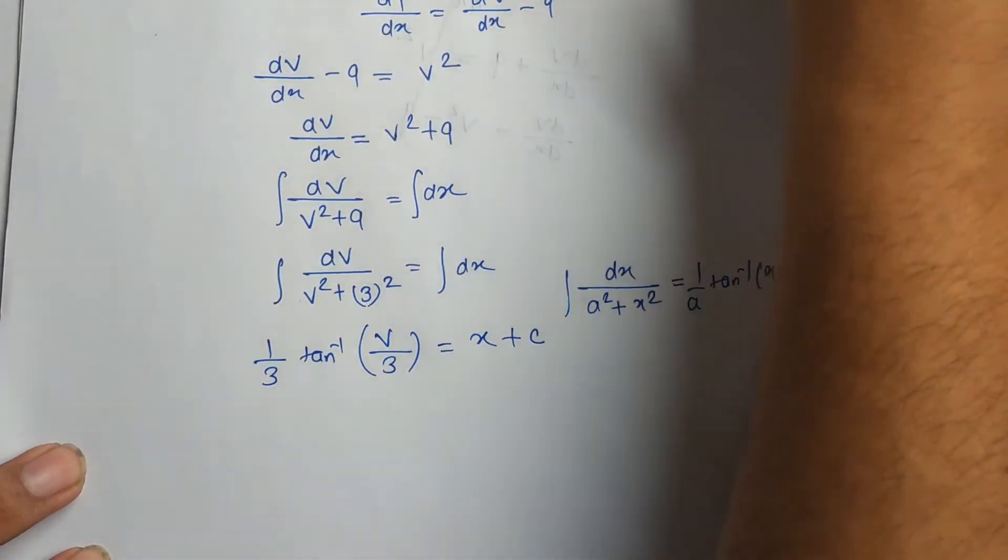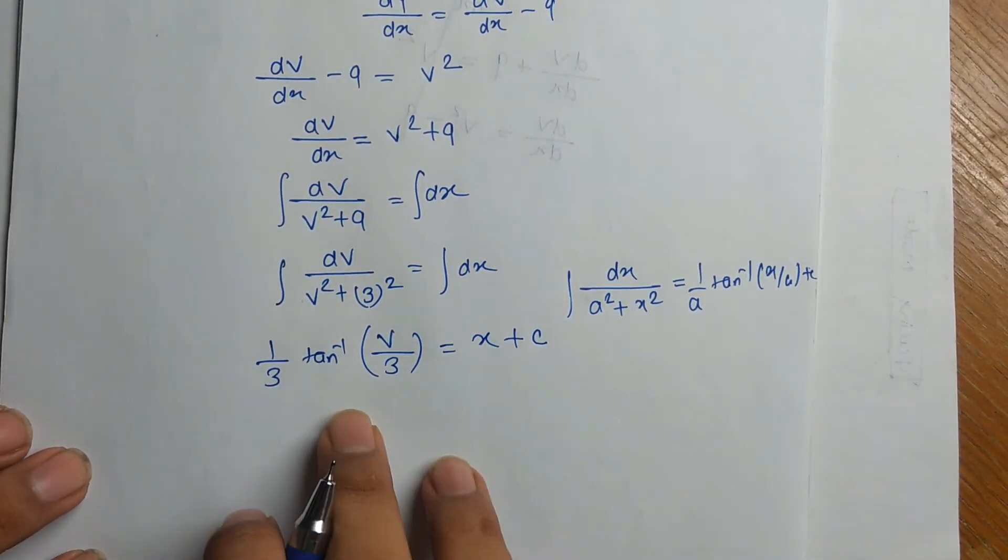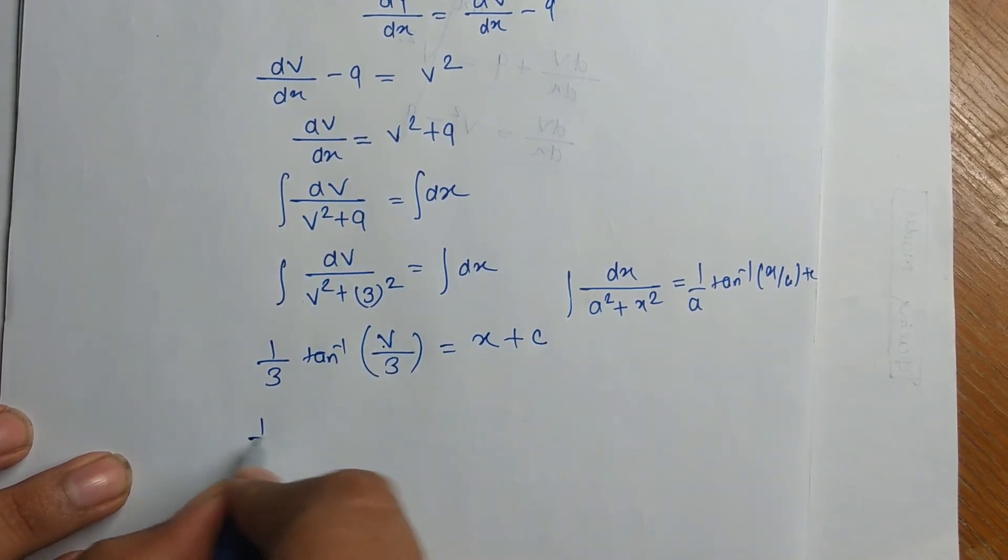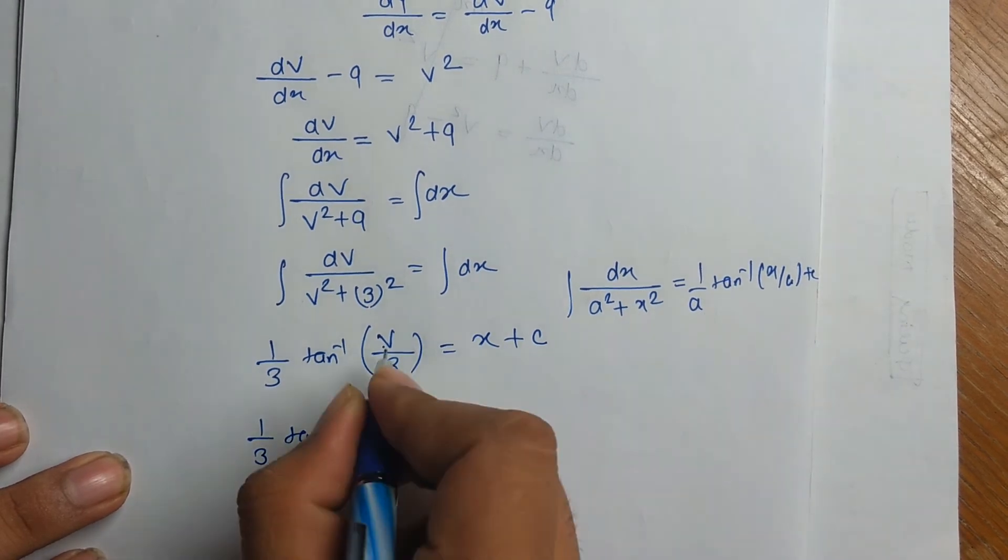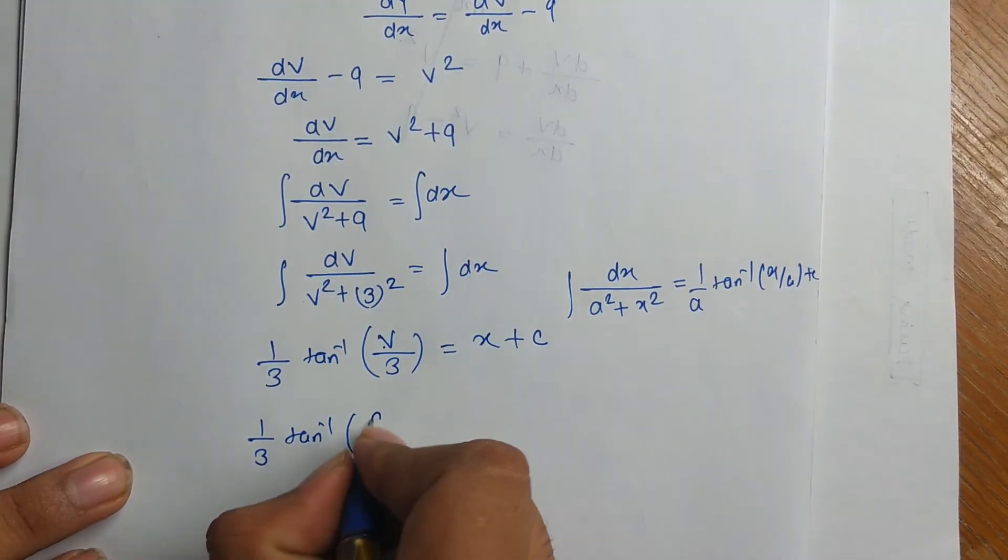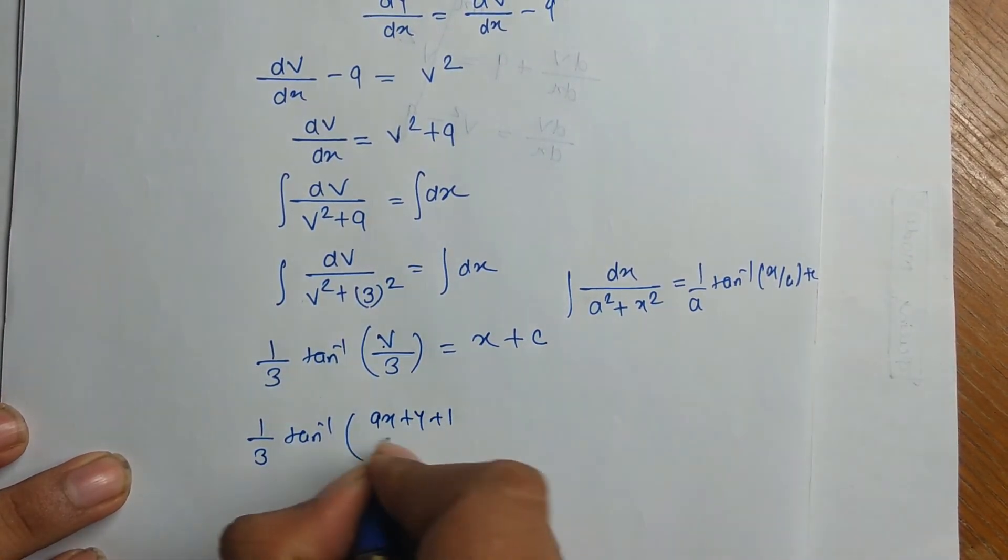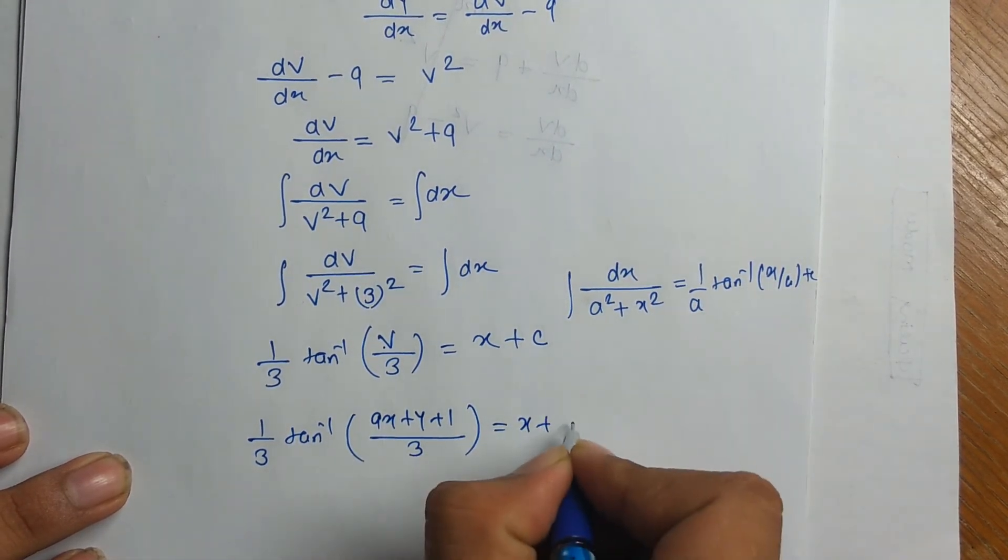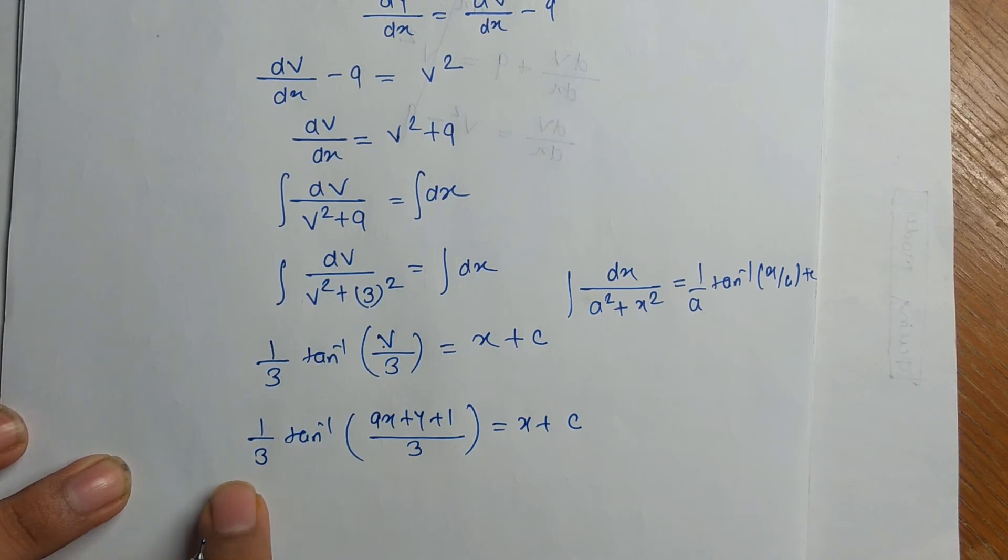That is our solution. But we have to re-substitute value of v. It will give us 1 by 3 tan inverse of, in place of v, we put 9x plus y plus 1 divided by 3 equal to x plus c.